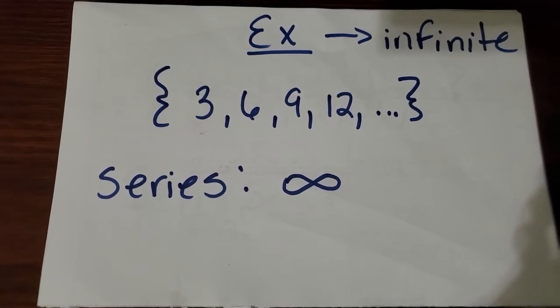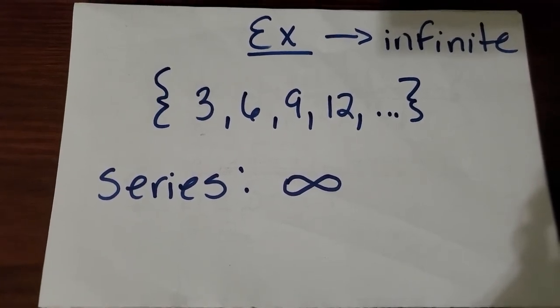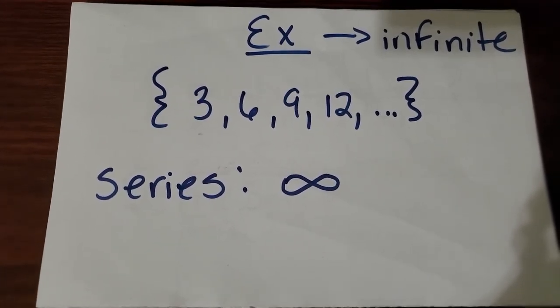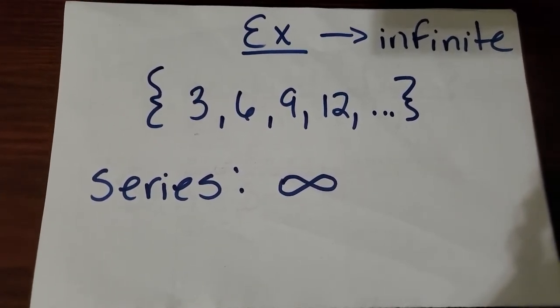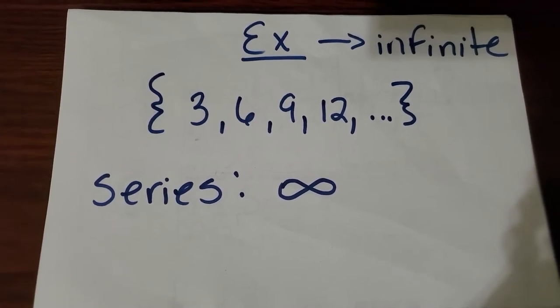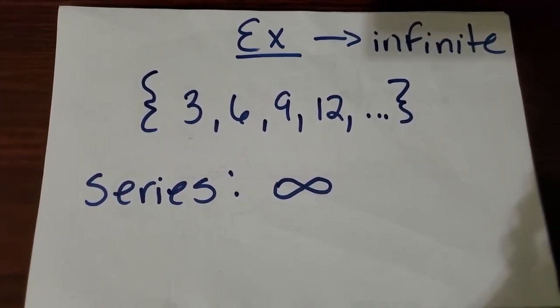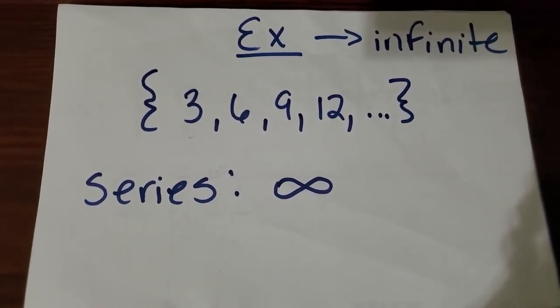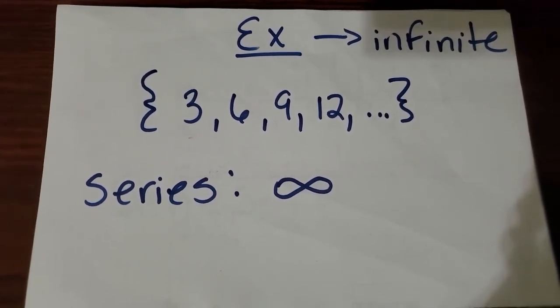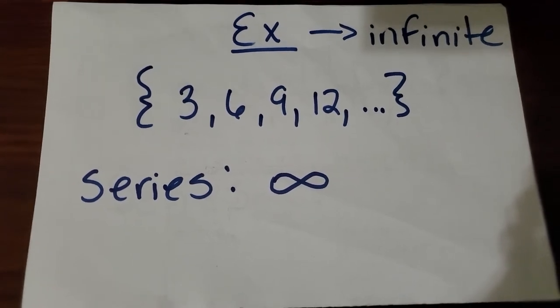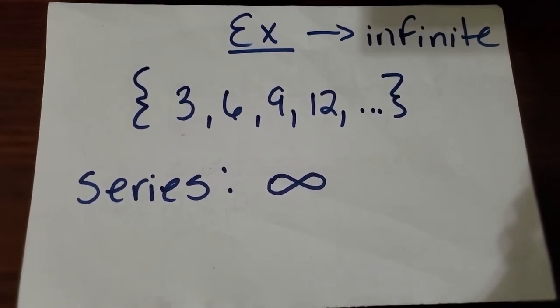Well what about a sequence with an infinite amount of terms? Infinite means that it has a number of terms that cannot be counted. It's unlimited. In this example, we have 3, 6, 9, 12, and it goes on to infinity. You cannot count the amount of terms in this particular sequence, so therefore the series is infinity.